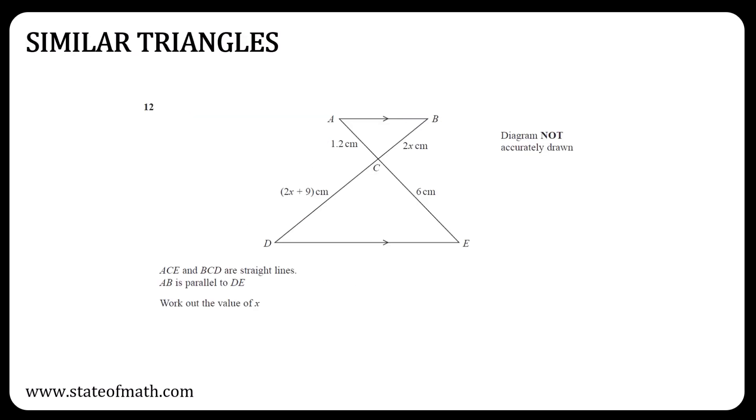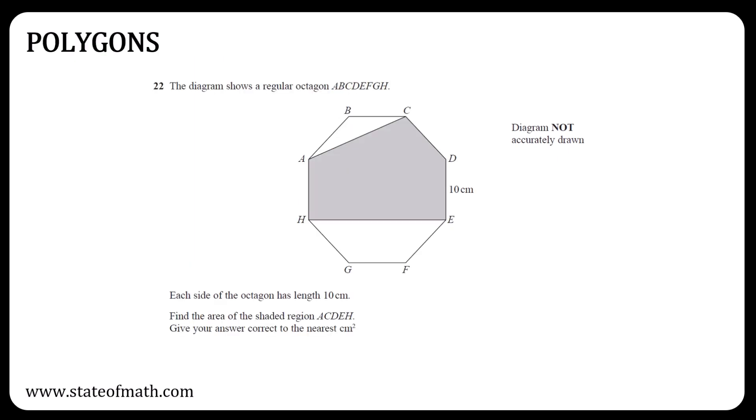Similar triangle questions are usually straightforward when appearing on their own, very unlikely to include areas and volumes since that was the last question in 1 HR, so in the extreme case this topic appears, it should be a simple one. No question with polygons in the first paper, so a must-revise topic for Paper 2 HR.